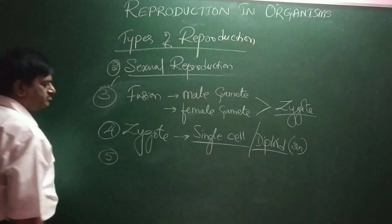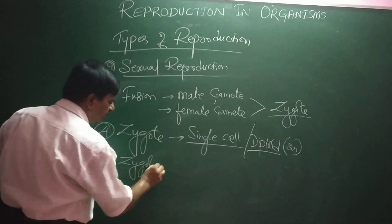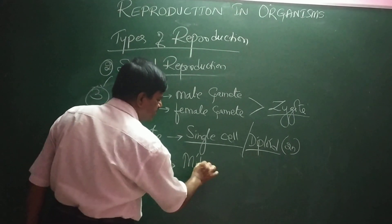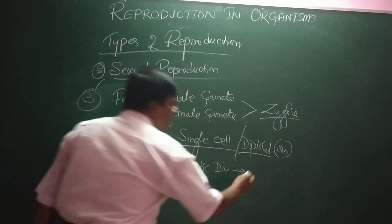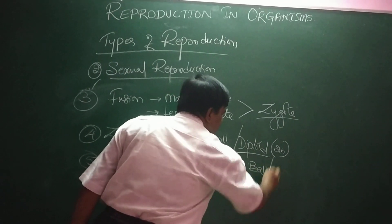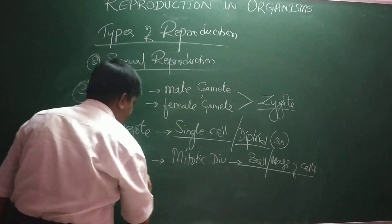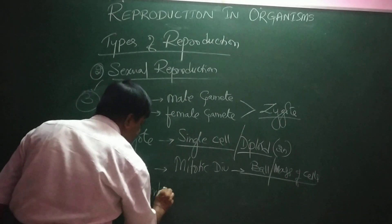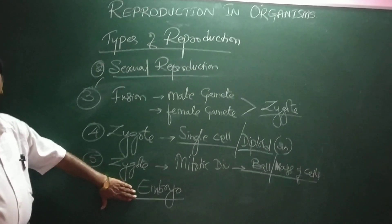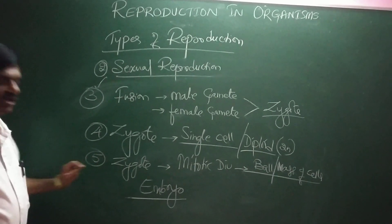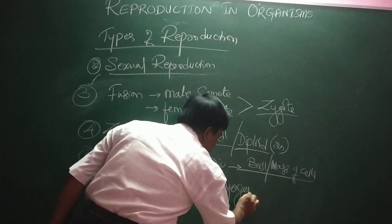The zygote undergoes repeated mitotic divisions to give rise to a ball or mass of cells called an embryo. The formation of the embryo, or synthesis of the embryo, is called embryogenesis.